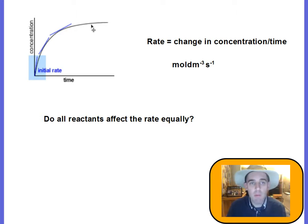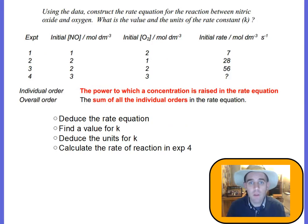We can do an experiment like this, get an initial rate, and use those initial rates. If we look at this data here, here's an experiment with nitrogen monoxide reacting with oxygen. Notice I've not even put in the actual equation. You can't work out the rate equation from the normal equation. You have to do it by experiment.